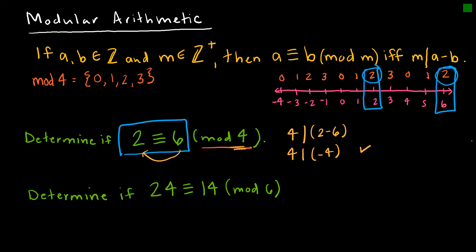We're not saying 2 is divisible by 4 or 6 is divisible by 4, but that these two are equivalent because the difference in their remainders is divisible by 4. Our next example: is 24 congruent to 14 mod 6? We ask: does 6 divide 24 minus 14? Does 6 divide 10? No, 6 does not divide 10 evenly, and therefore these are not equivalent.